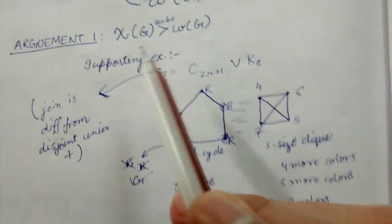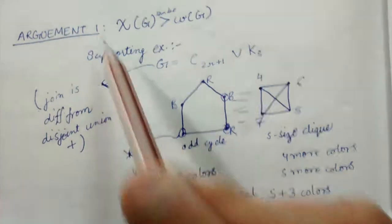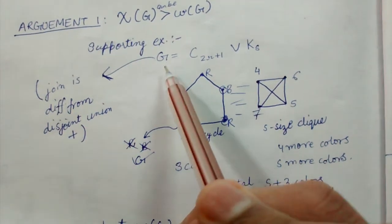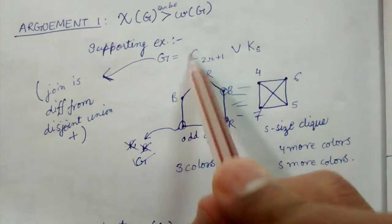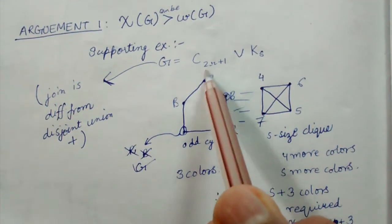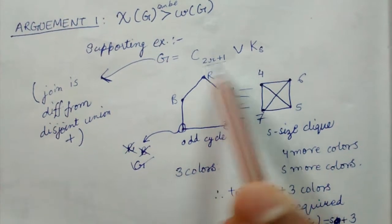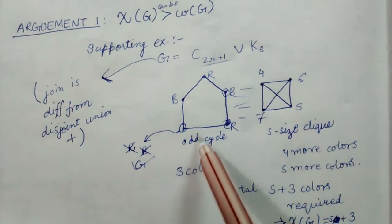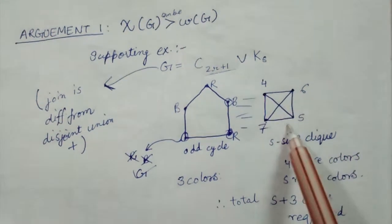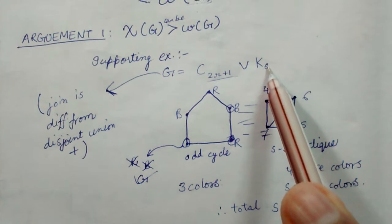Now we argue that χ(G) can be greater than ω(G) — this is argument number one. We give a supporting example. Consider the graph G = C(2r+1) join K_s, that is a cycle of 2r+1 vertices, which is always an odd number, so this is an odd cycle, joined with a clique. Let us consider a 4-clique — so we consider an s-sized clique in general but here let us consider a 4-clique.